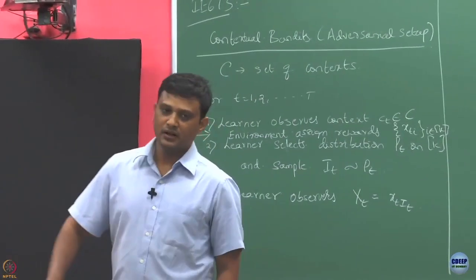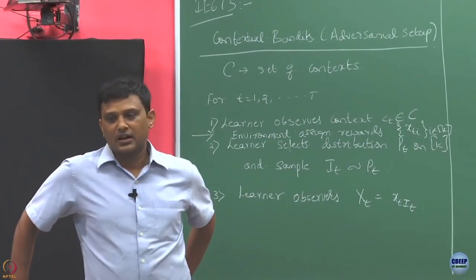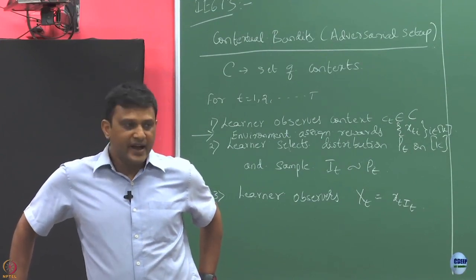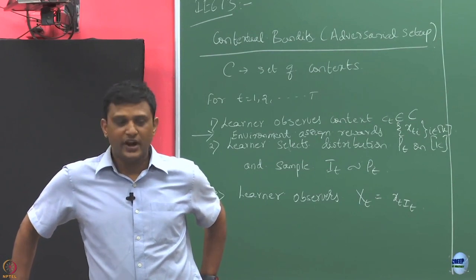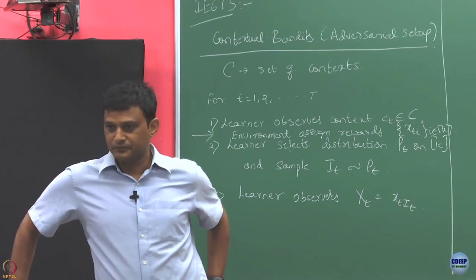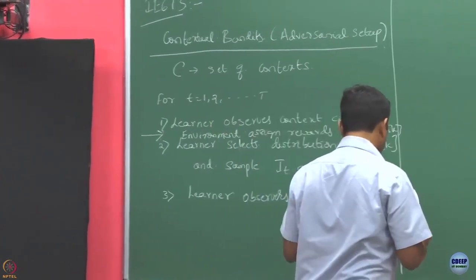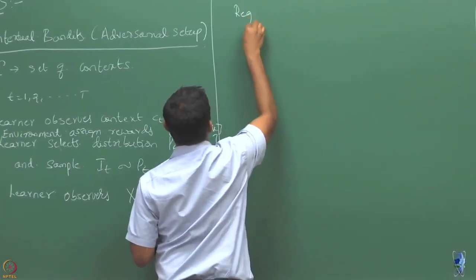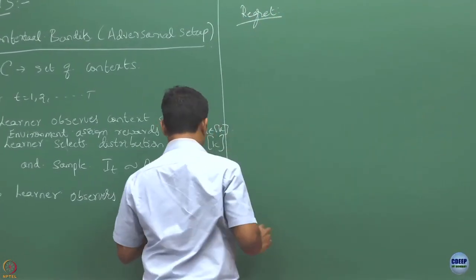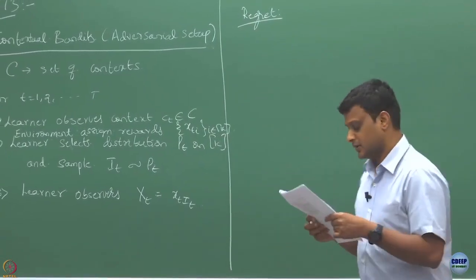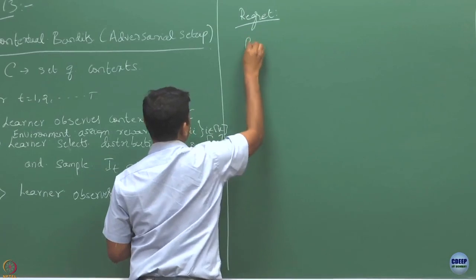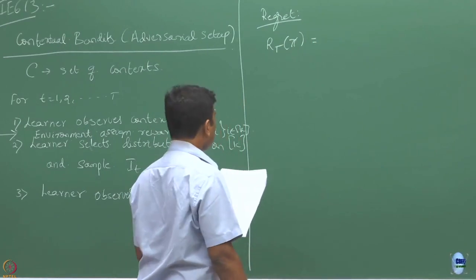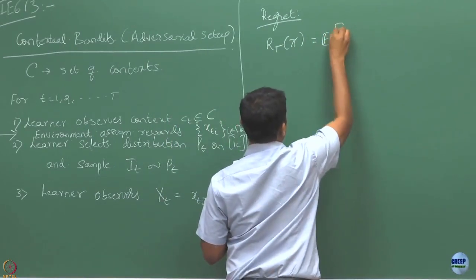Our goal is, as usual, to compare the performance of the learner against the best reward we would have got if we knew all the reward assignments. So we are going to define the regret, or the expected regret, of a policy pi as the expected value of the difference between the benchmark and the cumulative reward collected by the policy.